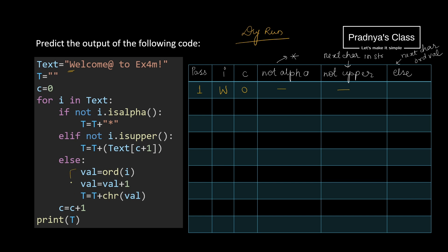Ultimately we come to the else part. We have to consider the next character according to the ordinal value, and we know A to Z has ordinal values in sequence. So after W we have X — capital X, because W is also capital. Moving to the next pass, the next character is E. C gets incremented to 1. The first criteria is false. We come to the second criteria — yes, it is not uppercase, so it satisfies the second condition. The value of C is 1, and 1+1 is 2. Index 2 of the string gives us L, so L gets concatenated to the previous string.